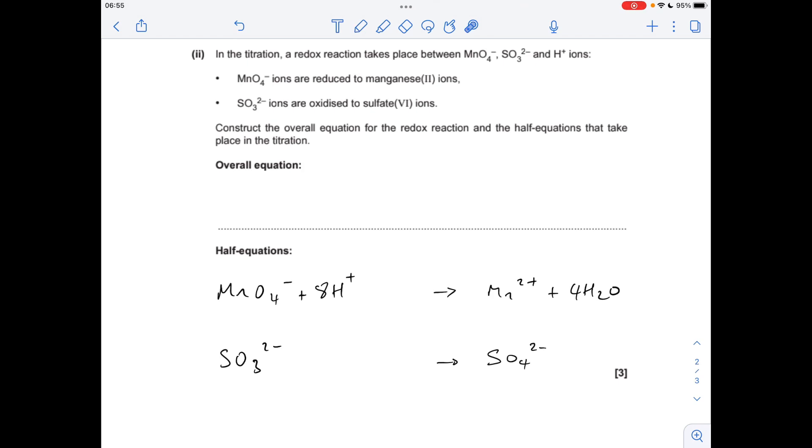Right, so all the atoms are balanced in that one. So we now just need to sort the charge out. So the overall charge at the moment on the left is 1 minus 8 plus, so 7 plus, whereas on the right it's only 2 plus. So we need to bring 7 plus down to 2 plus, so we need 5 electrons to do that. The other way you can do that is just look at the oxidation number change. So Mn starts at +7, goes to +2, so obviously it's got to gain 5 electrons to go down to that +2 oxidation state. So that's another way to do it.